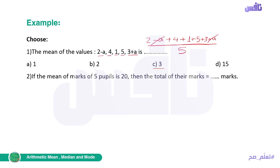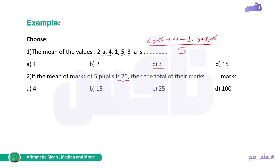Number two: if the mean of marks of five pupils is 20, then the total of their marks equals how many marks. We have choices as we can see. He has given us the mean as 20, because he says: if the mean of marks of five pupils is 20.